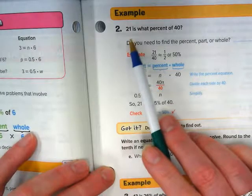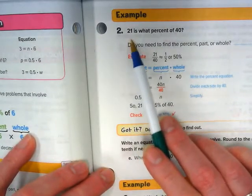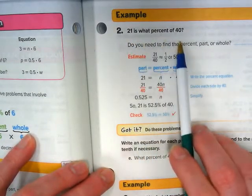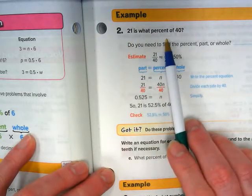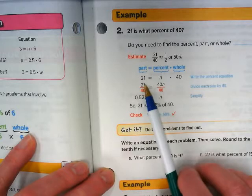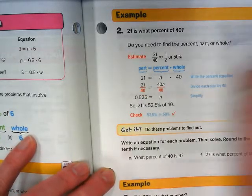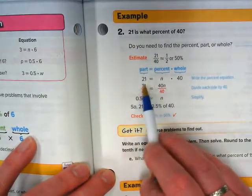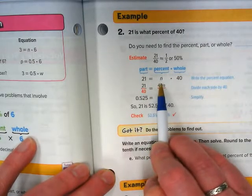Now we've got problems where we're trying to find the part 21 is what percent of 40. The question is what percent, so we don't know that part.